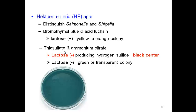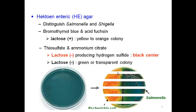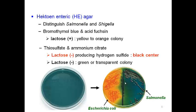Thiosulfate and ammonium citrate in HE agar can produce a black center due to hydrogen sulfide production. Shigella does not produce hydrogen sulfide, so it shows a blue-green colony without a black center.